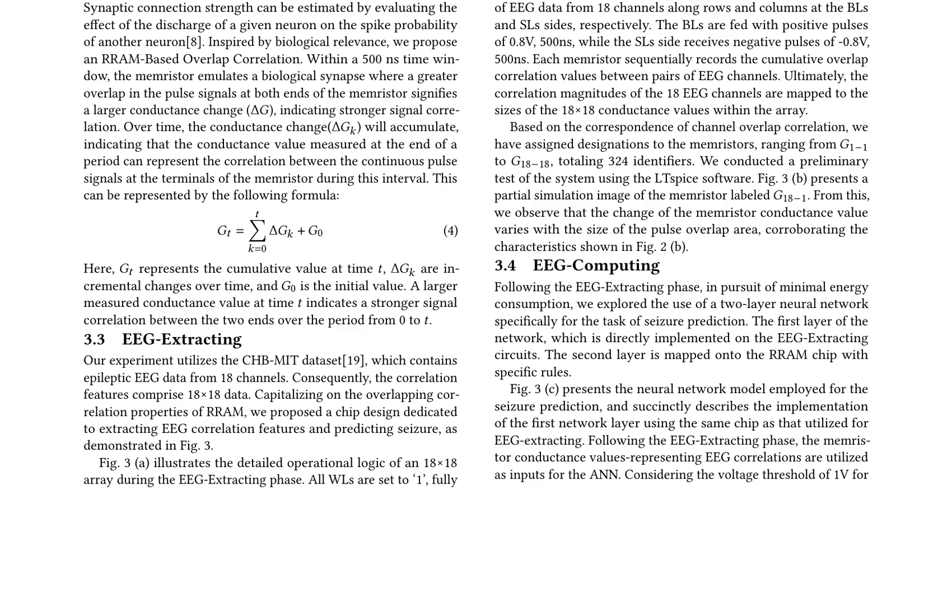The EEG computing system is designed to minimize energy consumption and consists of a two-layer neural network. The first layer is implemented using the same chip as the EEG extracting circuit, and the second layer is mapped onto the RRAM chip with specific rules. The neural network model employed for seizure prediction is presented, and the implementation of the first network layer using the same chip as the EEG extracting circuit is described. Preliminary simulations using the LTSPICE software demonstrate that the change of the memristor conductance value varies with the size of the pulse overlap area, corroborating the characteristics shown in previous figures. This novel RRAM-based circuit has the potential to enable low-power, real-time seizure prediction and detection in mobile devices.